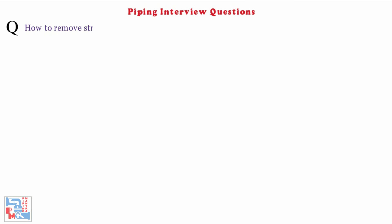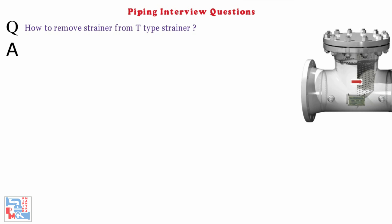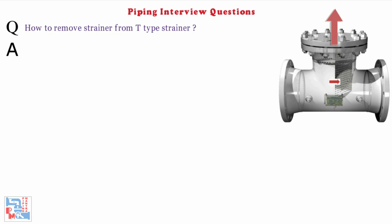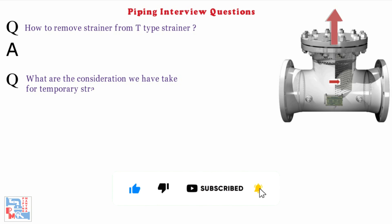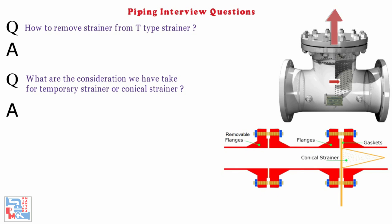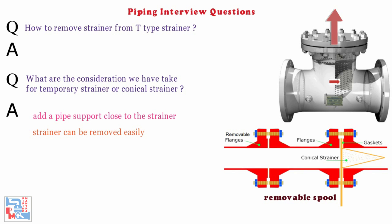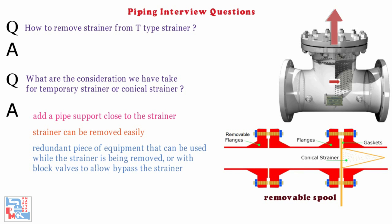Next: How to remove a strainer from a T-type strainer? The strainer is to be removed from the top, so the strainer shall be free from any obstructions. Next: What are the considerations we have to take for a temporary strainer or conical strainer? The strainer should be easily removed by adding a pipe support or pipe stand close to the strainer and/or a removable spool with a slightly longer length so that the strainer can be removed easily. It should be possible to remove the temporary strainer without shutting down the process, with the help of a redundant piece of equipment or with block valves to allow bypassing the strainer.